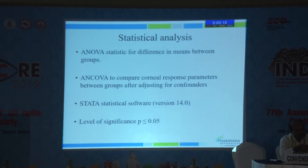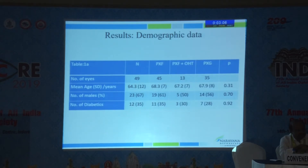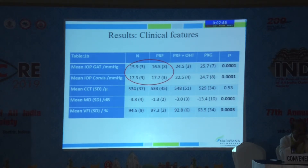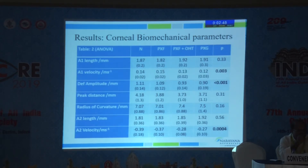We used ANOVA statistics for comparing means between the groups and ANCOVA for adjusting for confounders. The four groups were demographically similar. There was a significantly lower IOP — both Goldmann and Corvis — in the normal and PXF groups compared to the other two groups. Importantly, CCT was similar across all four groups, and the visual field parameters were worse in the PXG group compared to the other three groups.